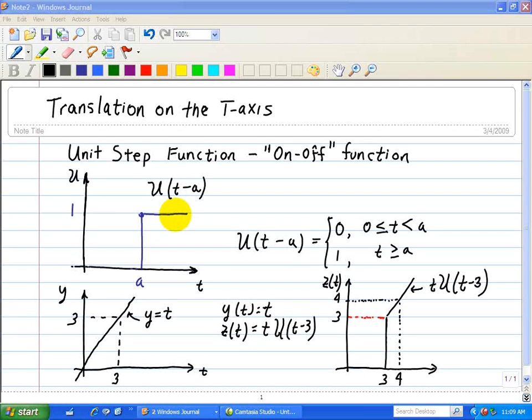Let's apply this to an example and illustrate it with y given as a ramp function equal to t. So if t is equal to 3, y is equal to 3 and this has a slope of 1. Now let's define another function called z(t) where t is multiplied by the step function that is delayed by 3 time units.